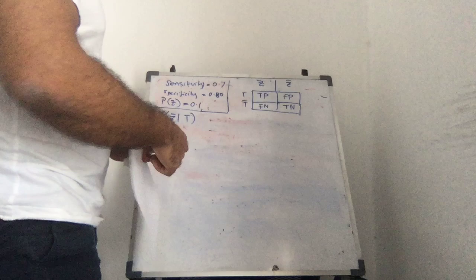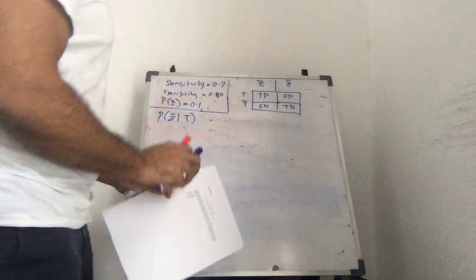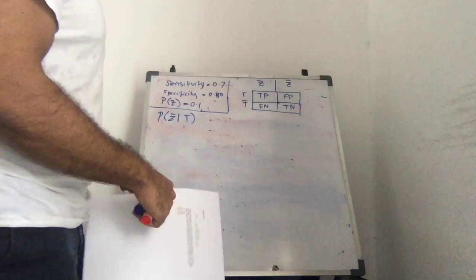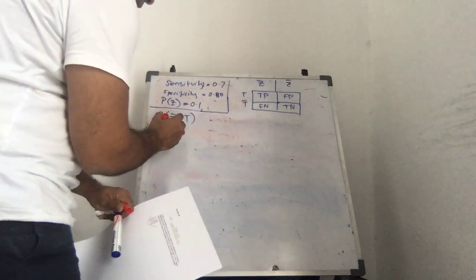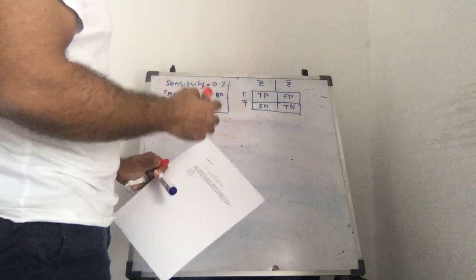So instead of trying to remember all these equations, I think it's easier if we just remember the one thing, which is the Bayes rule, right? And we know, so if we just say, call this A and call this B, then all of a sudden it's more familiar, right?